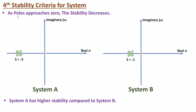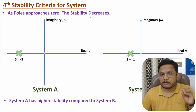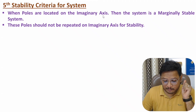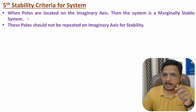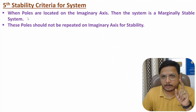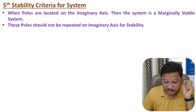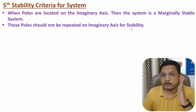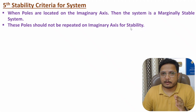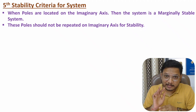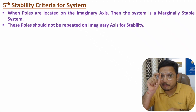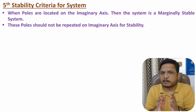Now the fifth stability criteria: when poles are located on the imaginary axis, the system is marginally stable. But one more important thing to understand — if poles are repeated on the imaginary axis, it will affect stability and make the system unstable. So poles should not be repeated on the imaginary axis. Poles on the imaginary axis give marginal stability, but repeated poles on the imaginary axis make the system unstable.